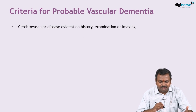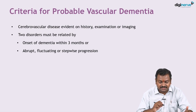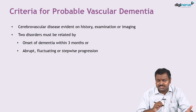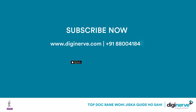The criteria for possible vascular dementia include cerebrovascular disease evident on history, examination, or imaging, plus two of the following: dementia onset within three months, and abrupt, fluctuating, or stepwise progression.